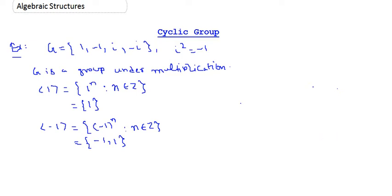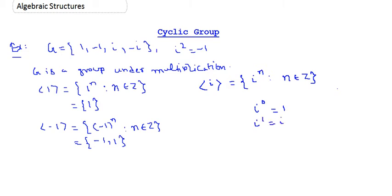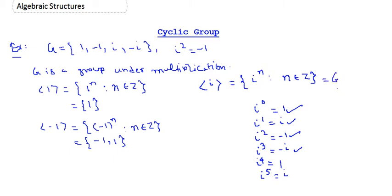Now let's check the subgroup generated by i. This is the collection of iⁿ for n in the integers. i⁰ = 1, i¹ = i, i² = -1, i³ = -i, i⁴ = 1, i⁵ = i — the elements repeat. We get 1, i, -1, -i, which is the whole group G. So the cyclic subgroup generated by i is the whole group G.